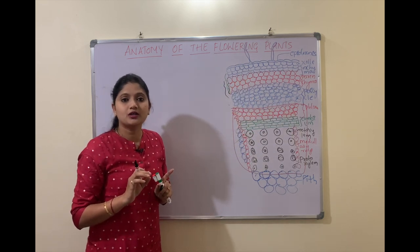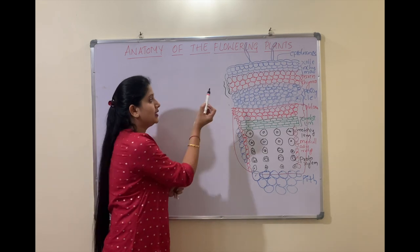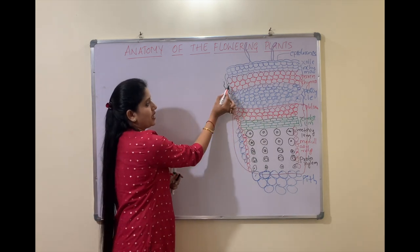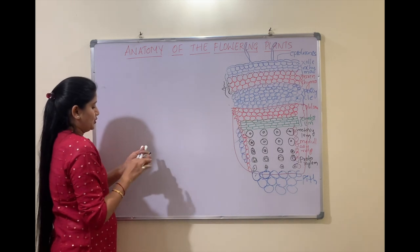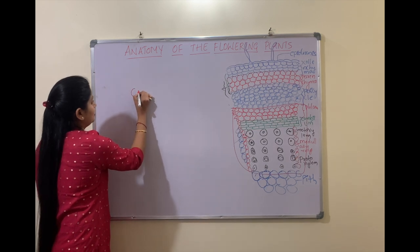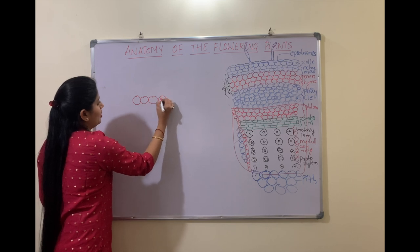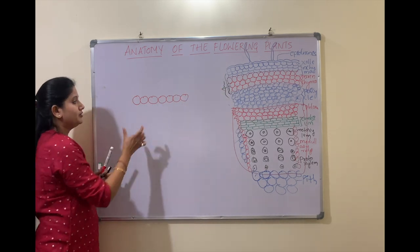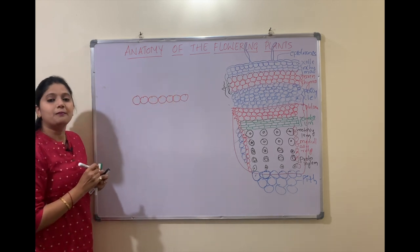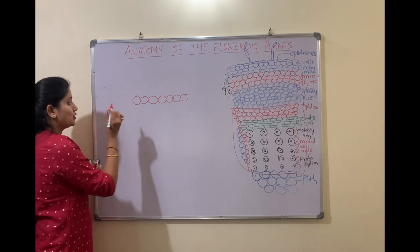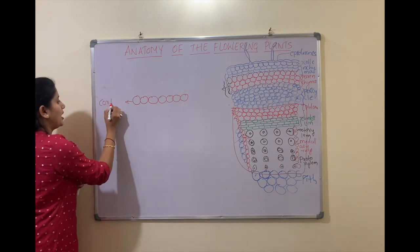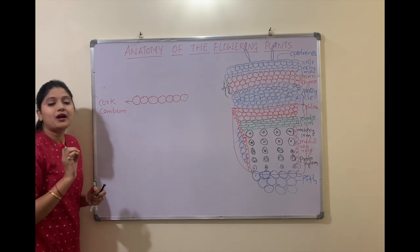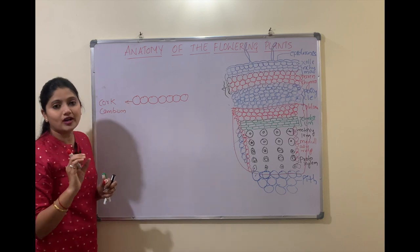So how exactly is the cork cambium being formed? The cork cambium is formed by the conversion of the parenchyma cells. I am just drawing one line of the parenchyma cells here. This parenchyma cell will now convert into the meristematic cells. When they convert into meristematic cells, that layer is called the cork cambium.